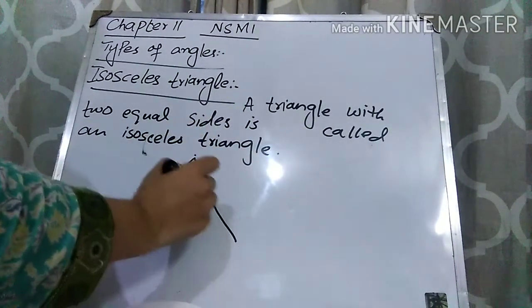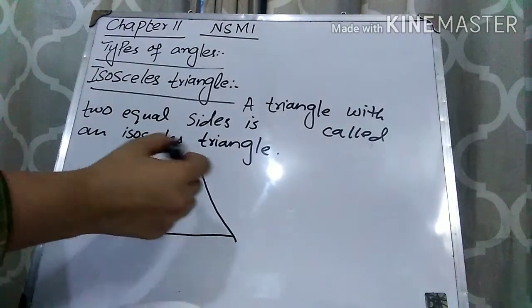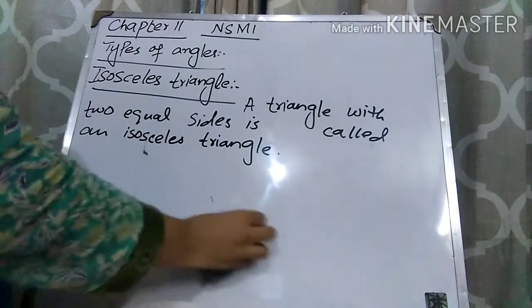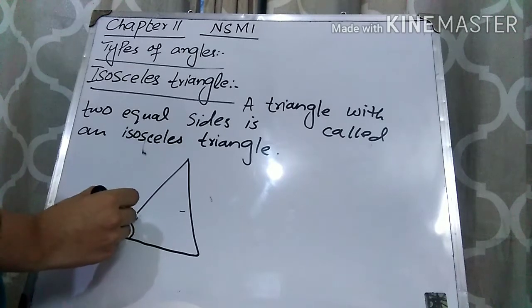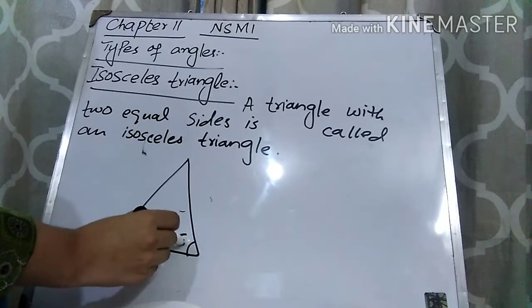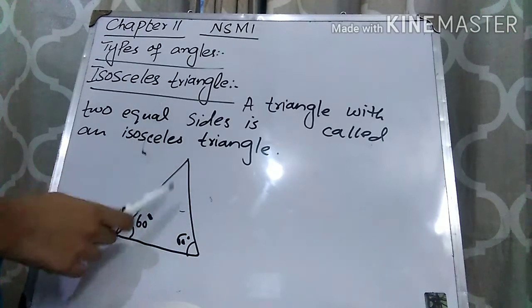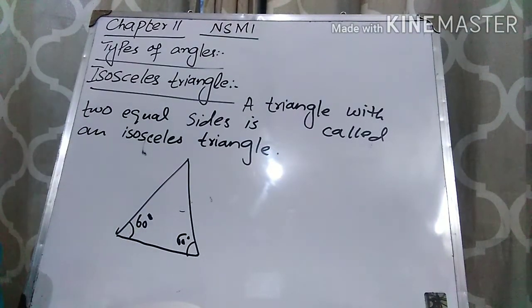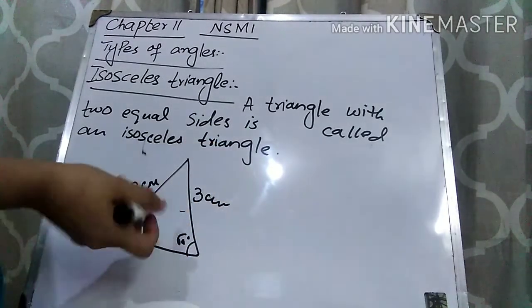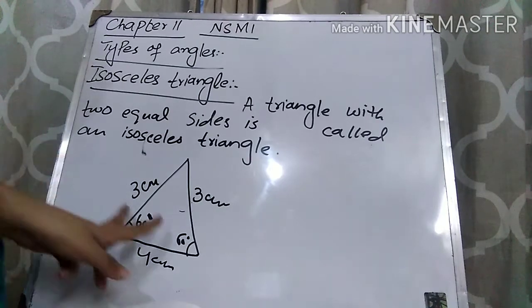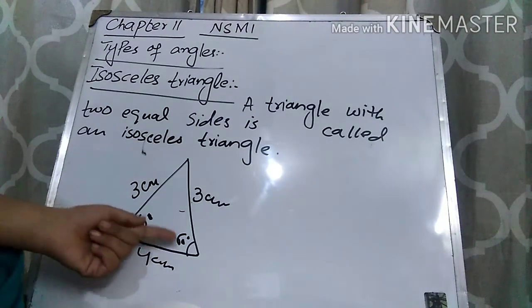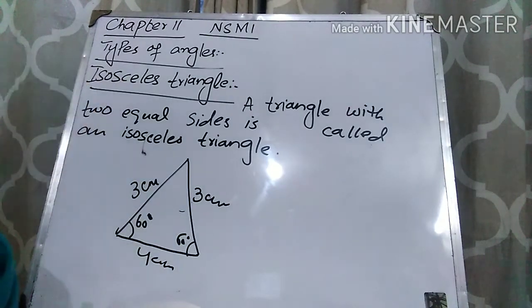Let's suppose here is a triangle and these two sides are equal. If these two sides are equal, it means their angles are also equal. If this angle is 60 degrees, then this angle is also 60 degrees. These two sides are equal, so this is an isosceles triangle — a triangle with two equal sides. If this side is 3 cm, this is also 3 cm, while the third side can be any measurement like 4 cm or 5 cm. A triangle with two equal sides and two equal angles is called an isosceles triangle.